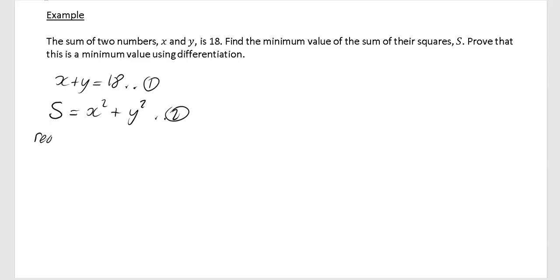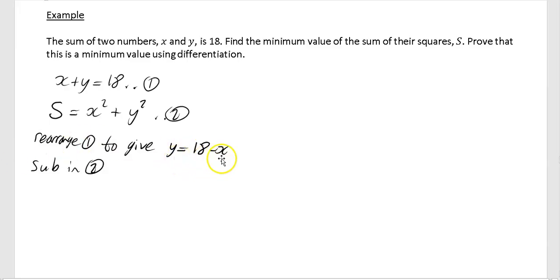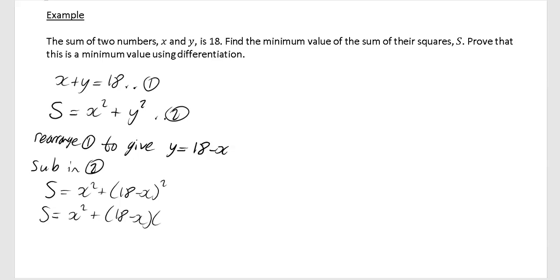People are generally more comfortable doing it this way, as we're used to differentiating with respect to x. We then substitute into equation 2 — everywhere you see y, write 18 minus x. So equation 2 becomes s equals x² plus (18 minus x)². Expanding: 18×18 is 324, 18×(−x) is −18x, (−x)×18 is another −18x, and (−x)×(−x) is +x². Tidying up gives s equals 2x² minus 36x plus 324.